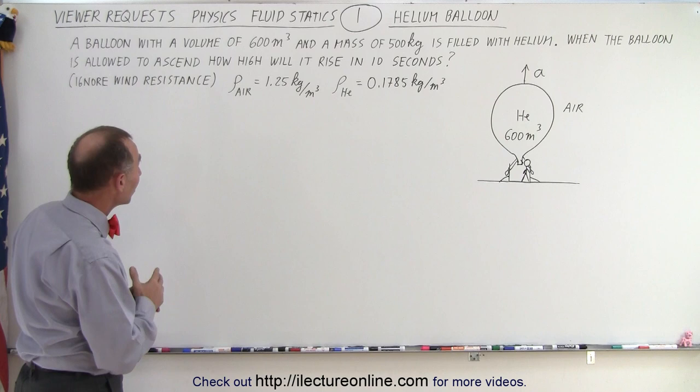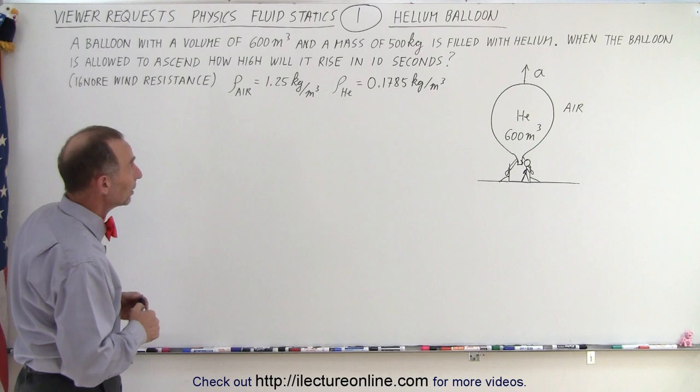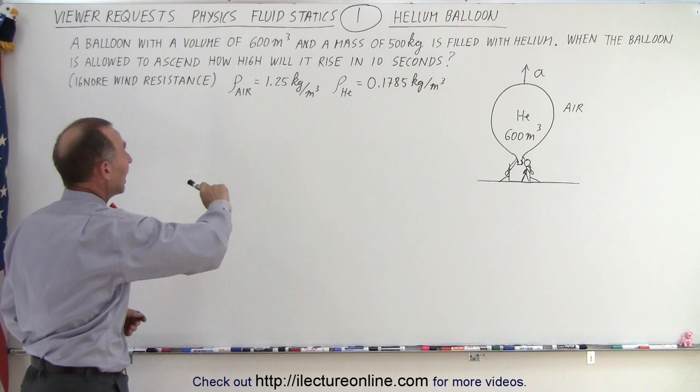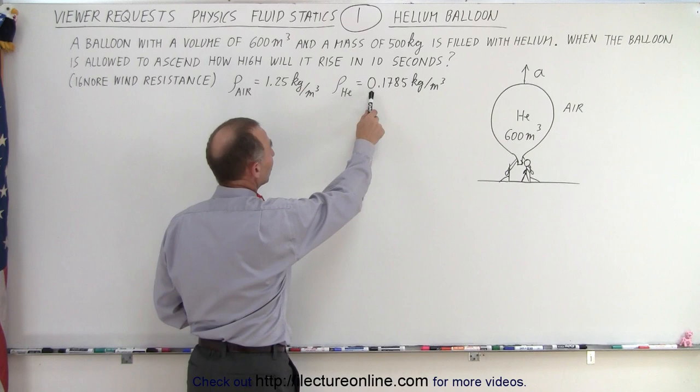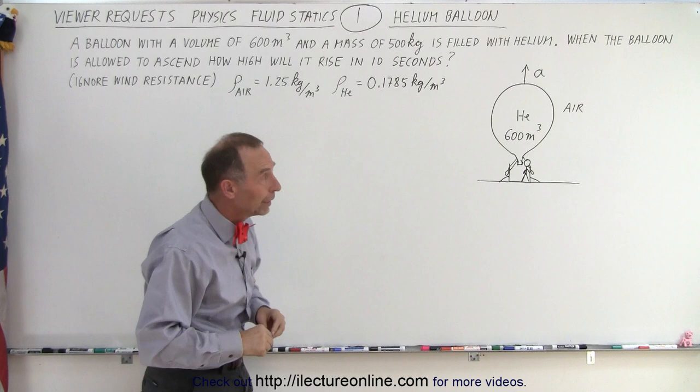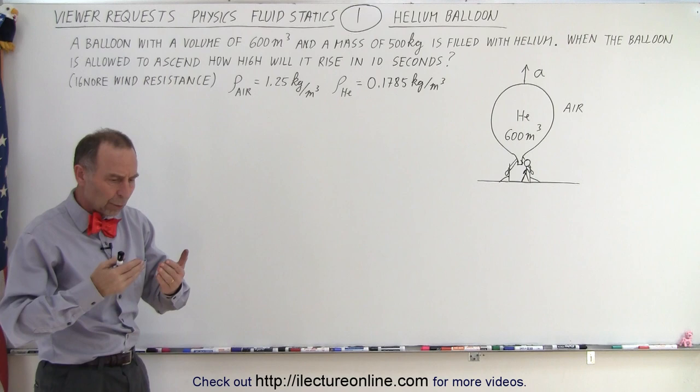A balloon with a volume of 600 cubic meters and a mass of 500 kilograms is filled with helium. When the balloon is allowed to ascend, how high will it rise in 10 seconds? Assuming it starts from the ground, we ignore wind resistance. The density of air is about 1.25 kilograms per cubic meter, and the density of helium is 0.1785 kilograms per cubic meter. So it's tied to the ground, filled with helium, we cut the ropes, the balloon begins to ascend — how high will it go in the first 10 seconds?